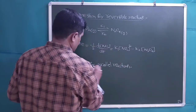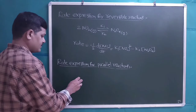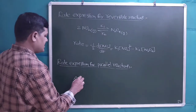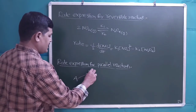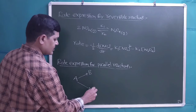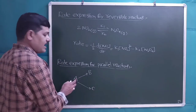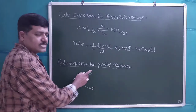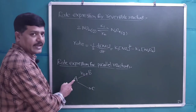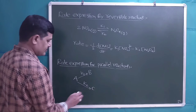Now let us consider rate expressions for parallel reactions. In a parallel reaction, A simultaneously converts into B and C. Let us assume that for the reaction A → B the rate constant is K1, and for A → C the rate constant is K2.